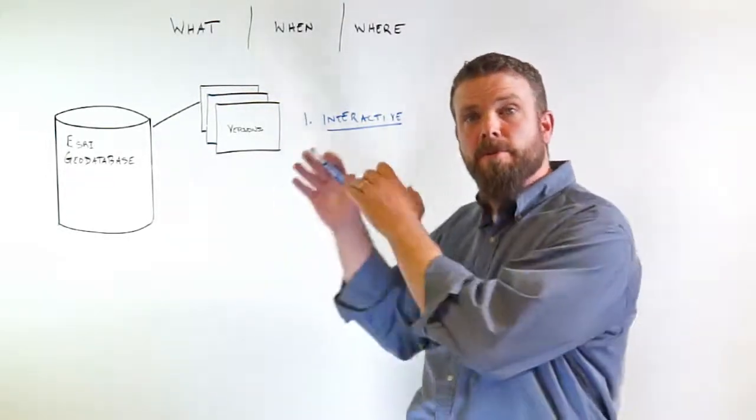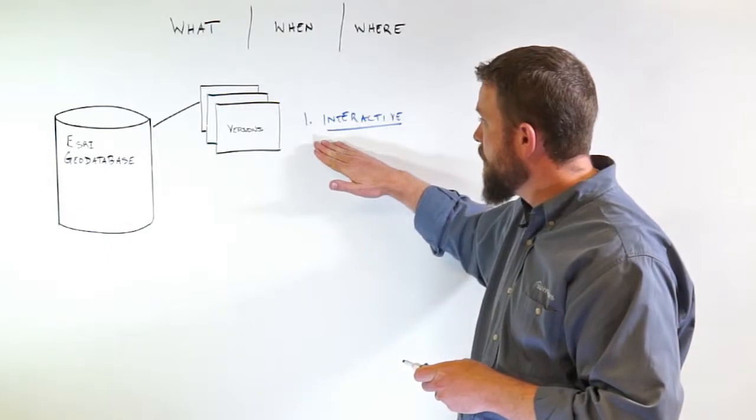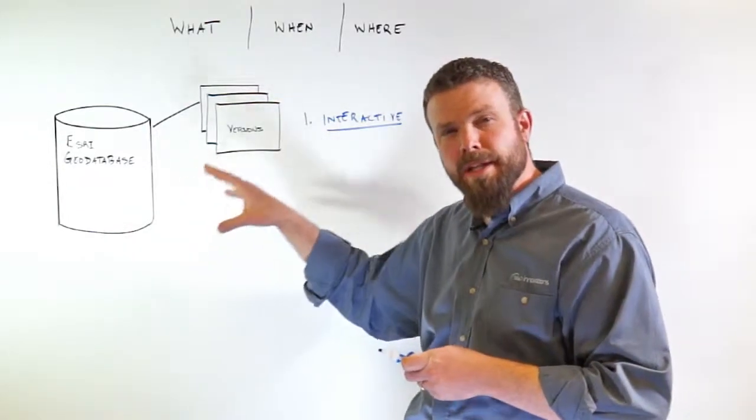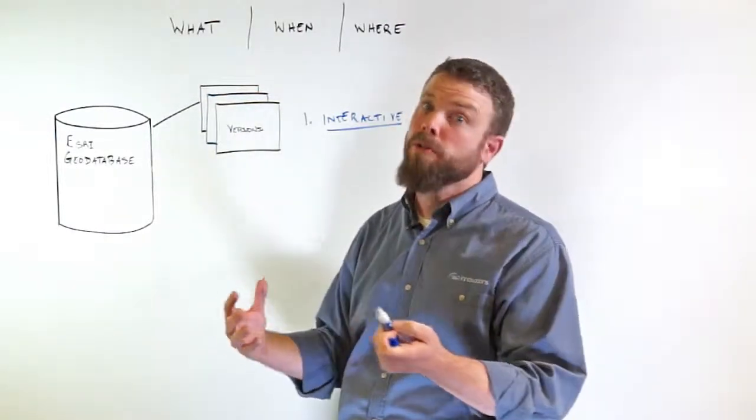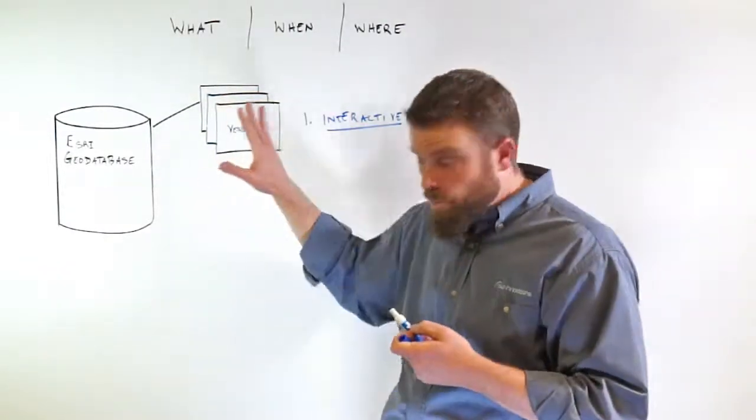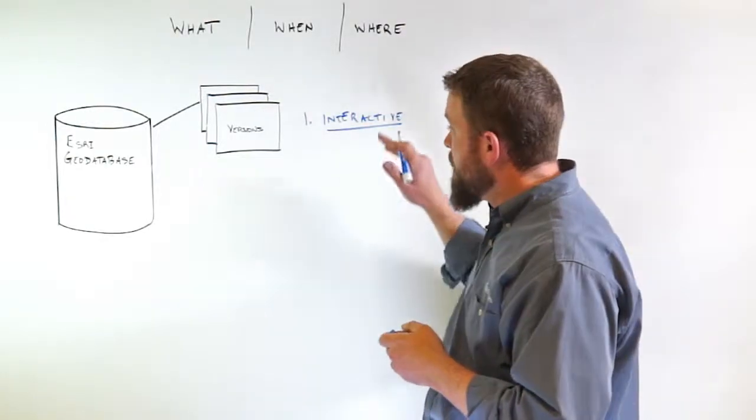Before this version is posted, I can run the All Edits report in an interactive mode, which will show me the edits within the version. I can see the ads in blue, I can see the deletes in red, and my updates in orange and green, including shape updates, all right within the version before it's posted. So that helps a ton.